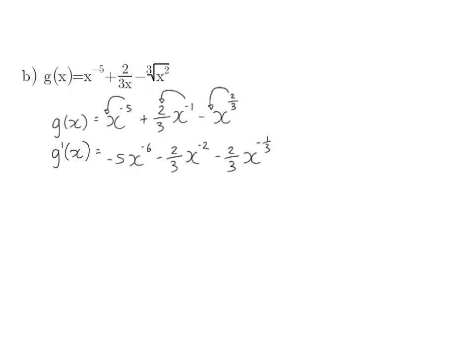Lastly, it is important to read your instructions. If the instruction is simply to calculate the derivative, we can stop where we are. But if the instruction is to leave your answer with positive exponents, we need to change each of these three variables into positive exponents. So, in my first term, x to the power of minus 6 will be moved to the denominator and become positive. The same thing will happen to x squared in the second term, and in the third term, x to the power of minus a third will become x to the power of one-third in the denominator.